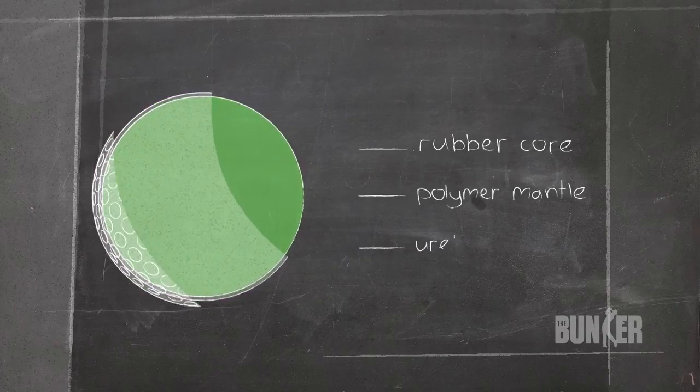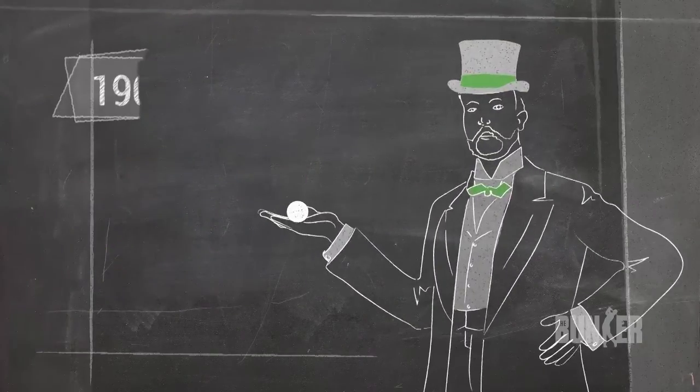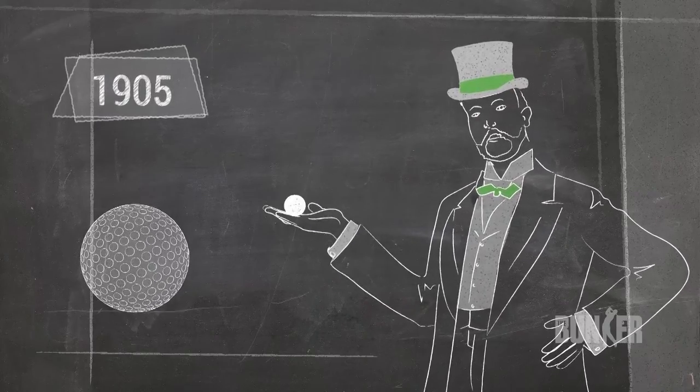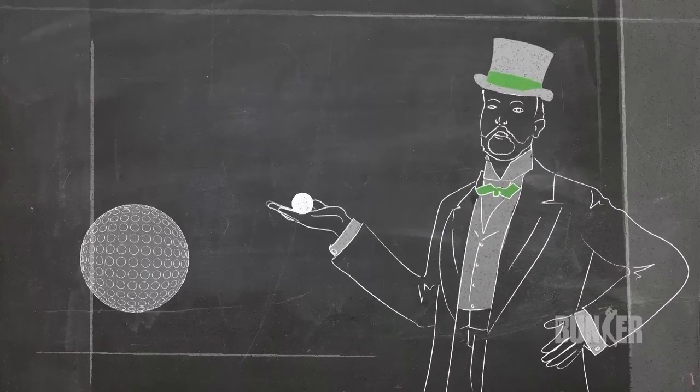While the materials used to create golf balls changed, English engineer William Taylor designed a crafty, concave dimple design in 1905.